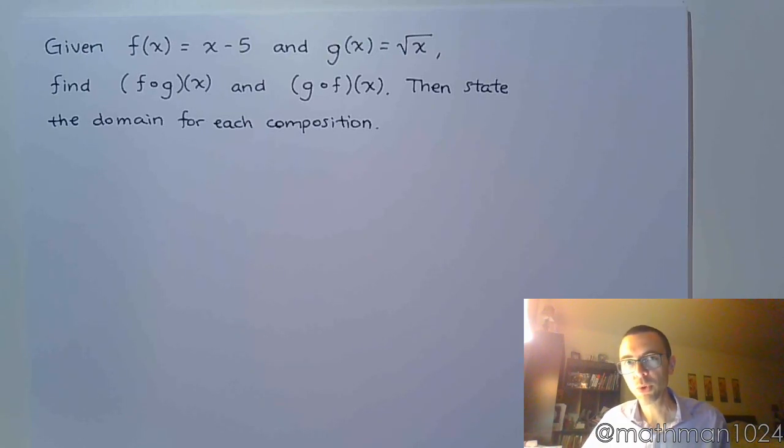So one last video before we walk away from function composition for a little bit. Let's take f of x equals x minus 5 and g of x equals the square root of x. Let's find the two different compositions with x, not with plugging in a number, and let's see if we can find the domain for each of these.